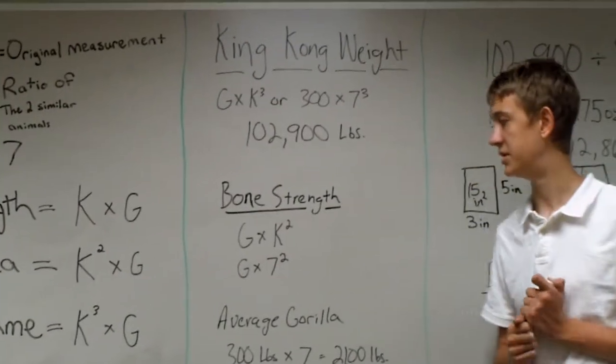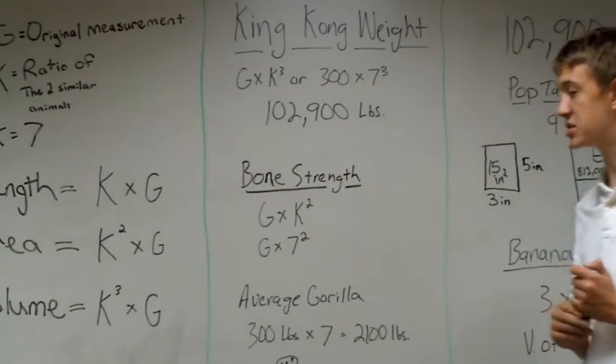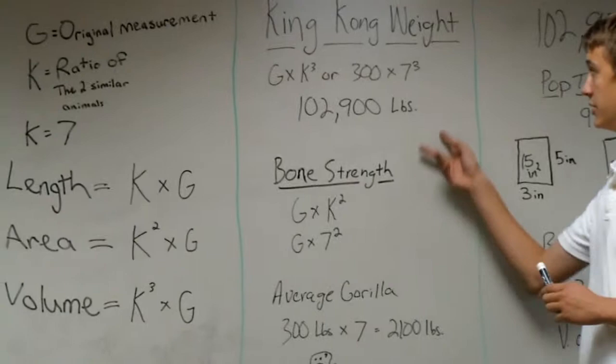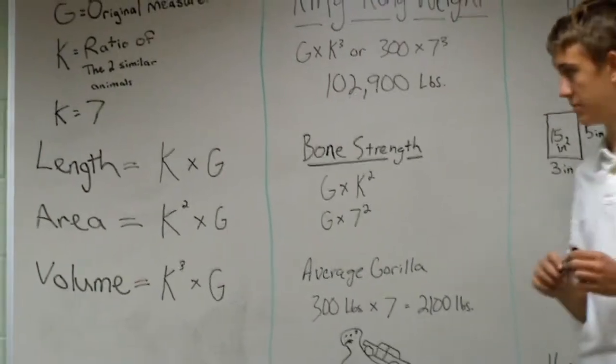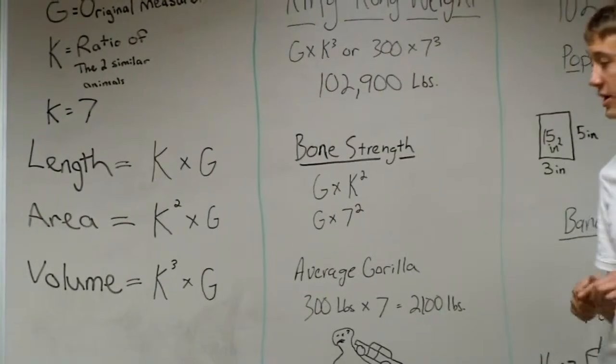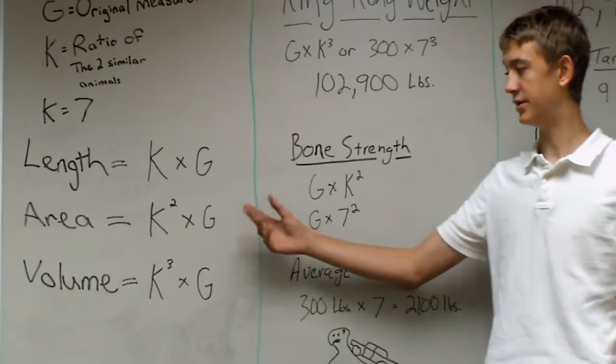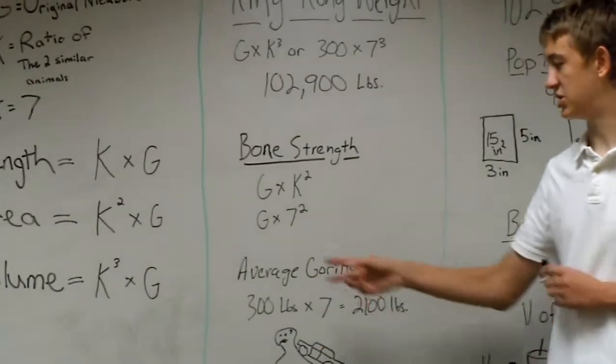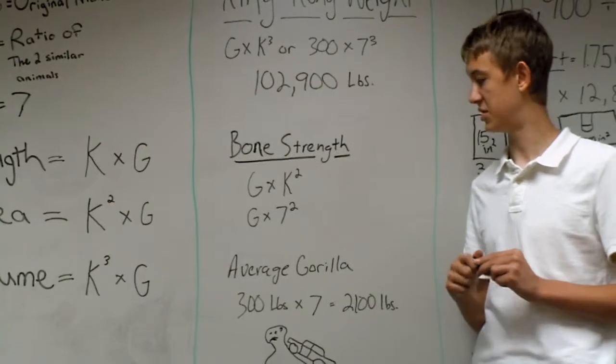Which isn't bad, but when you look at his bone strength, which isn't proportional to his weight, because it follows the cross-sectional area, which follows the area equation. That would make it G multiplied by seven squared.